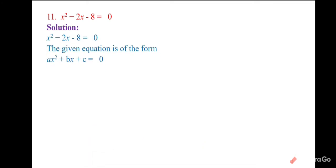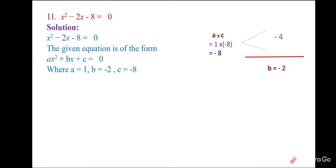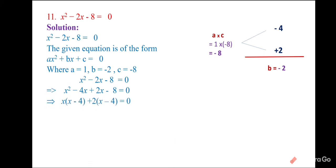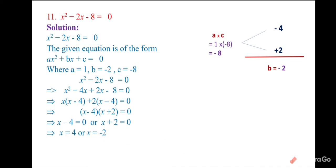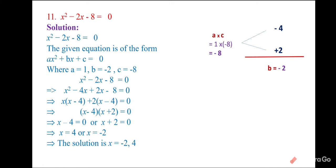Next: x² − 2x − 8 = 0, with a = 1, b = −2, c = −8. Finding factors: a × c = −8 and b = −2. The pair −4 and +2 works: (−4)(+2) = −8 and (−4) + 2 = −2. Splitting: x(x − 4) + 2(x − 4) = 0, so (x − 4)(x + 2) = 0. Solutions: x = 4 or x = −2.